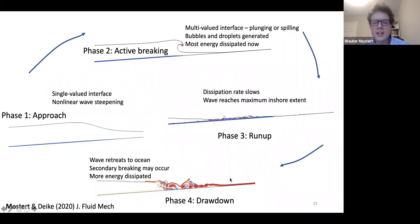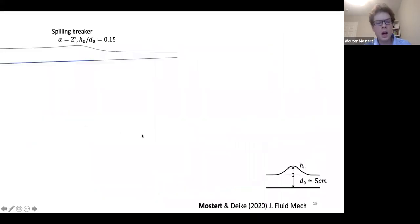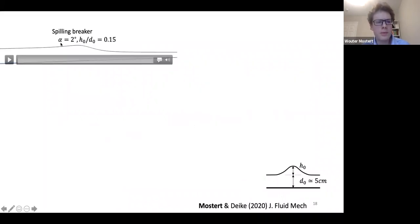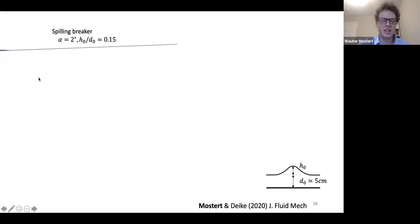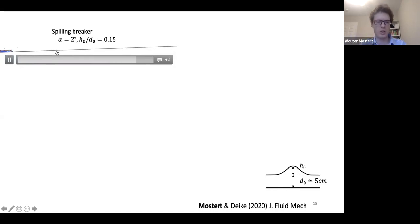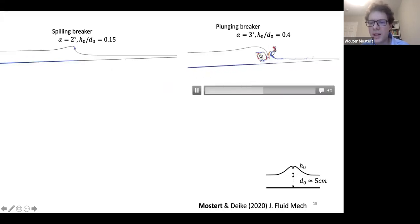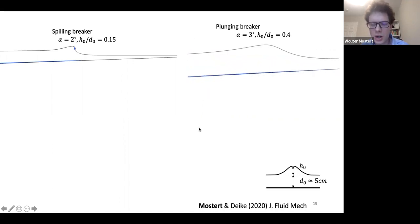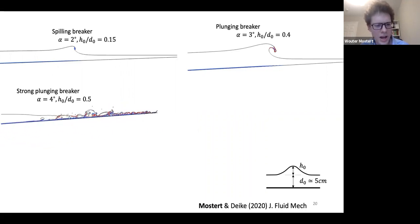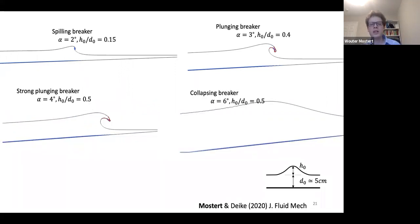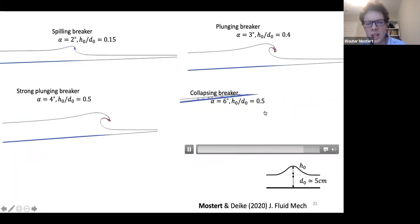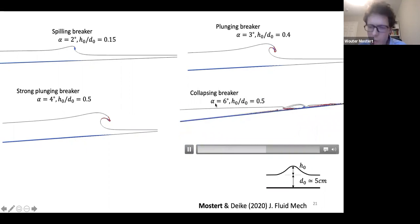Varying the beach slope and wave height produces different breaker types. At shallow slopes and small waves: spilling breakers, where the wave doesn't properly overturn but spills across its own front surface. Increasing slope and wave height gives plunging breakers with a proper cavity and jet projecting forward into the water. Further increases give stronger plunging breakers with higher jet velocities until the breaker impinges directly onto the beach — called a collapsing breaker.